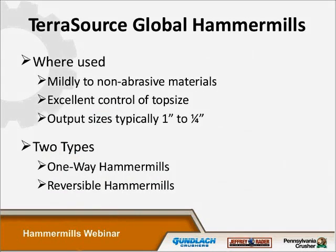Where are hammer mills applied? Typically, we use them to crush medium to low abrasive materials where excellent control of the product top size is required. Typical output sizes with a hammer mill might range anywhere from a quarter of an inch up to about an inch top size.